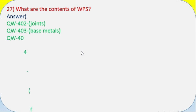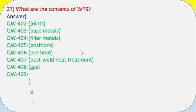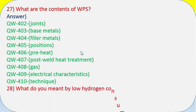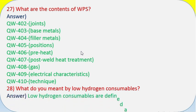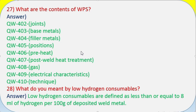Question 27: What are the contents of WPS? Answer: QW-402 Joints, QW-403 Base Metals, QW-404 Filler Metals, QW-405 Positions, QW-406 Preheat, QW-407 Post Weld Heat Treatment, QW-408 Gas, QW-409 Electrical Characteristics, QW-410 Technique. Question 28: What do you mean by low hydrogen consumables? Answer: Low hydrogen consumables are defined as less than or equal to 8 ml of hydrogen per 100 grams of deposited weld metal.